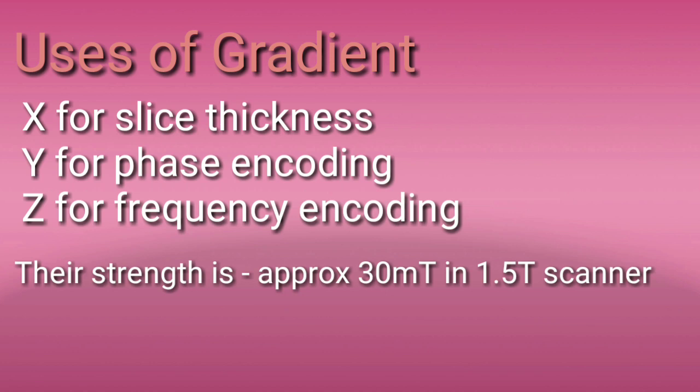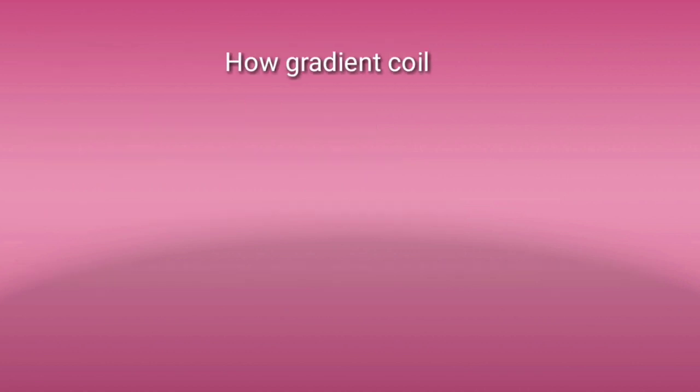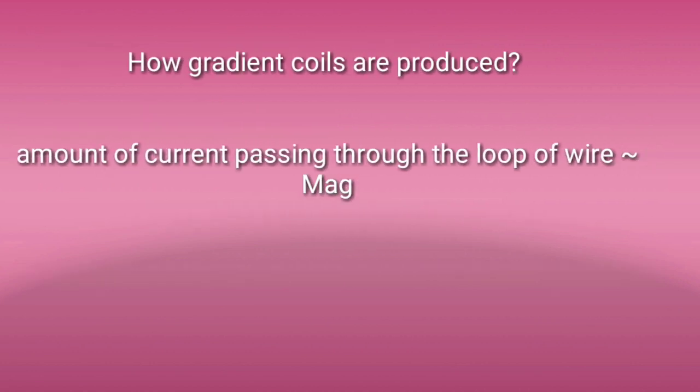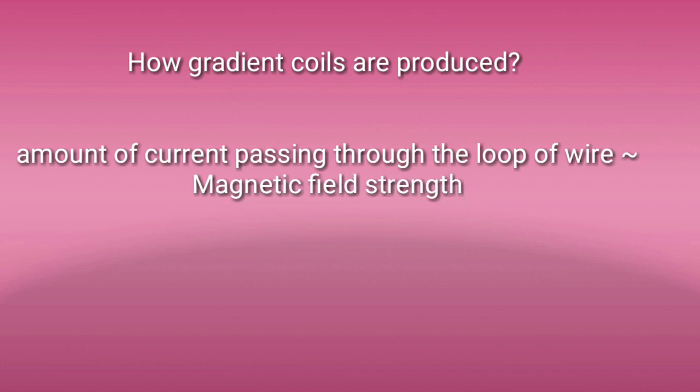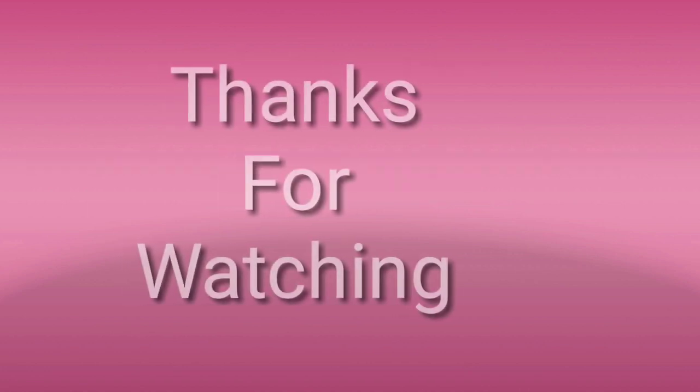The magnetic field strength is quite low — around 30 milli Tesla. Your question might be: how are gradient coils produced? Gradient coils are built on the same principle as the main magnet — using many loops of wire. However much current you pass through them, that much magnetic field strength will be produced. This is how a gradient coil is produced.